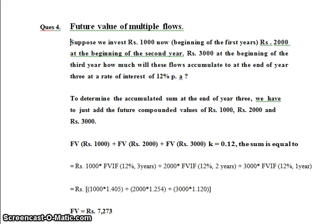When we refer the future value table, we take the future value interest factor at 12% for 3 years, 12% for 2 years, and 12% for 1 year. After considering the table values: Rs. 1000 into FVIF at 12% for 3 years is 1.405, plus 2000 into FVIF at 12% for 2 years is 1.254, plus 3000 into FVIF at 12% for 1 year is 1.120. If we multiply and add all the values, the future value comes to Rs. 7,273.